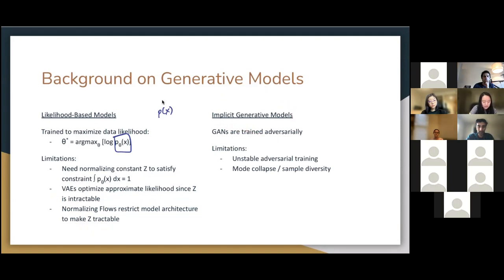On the other hand, implicit generative models don't model the data likelihood directly. Instead, something like GANs are trained adversarially, where there's a generator model and a discriminator model trained with a minimax loss. Even though GANs have generally achieved state of the art since they've been introduced, there's still some limitations. So adversarial training can be unstable and have difficulties in converging. Also, they face challenges with sample diversity. Sometimes they face mode collapse.